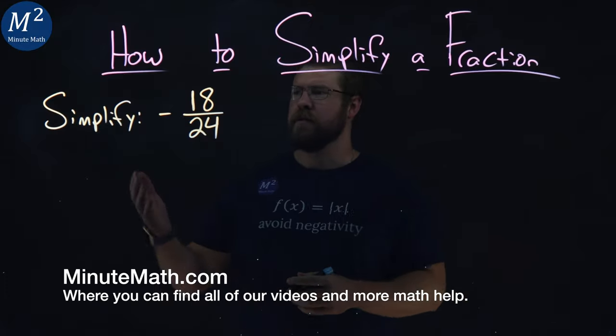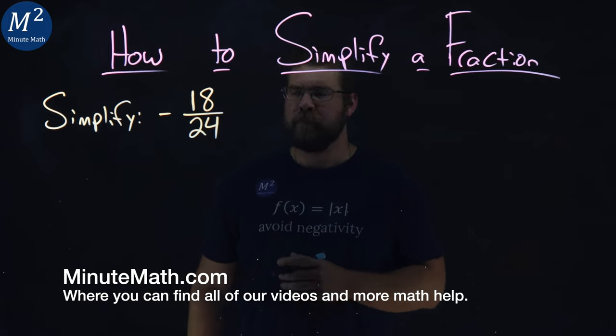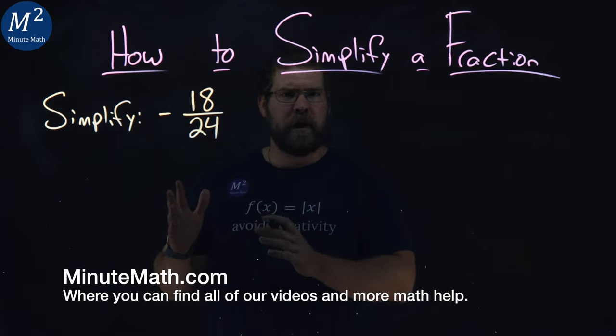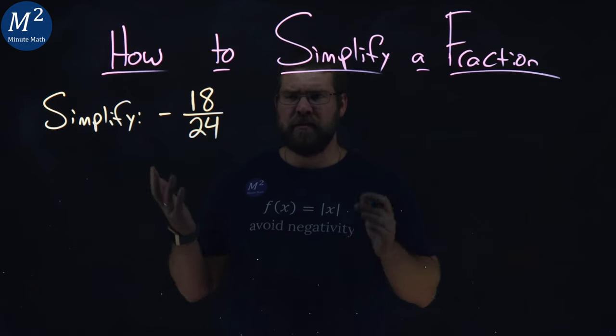We're given this problem here, simplify negative 18 over 24. When we simplify a negative fraction, it's just the same as a positive fraction. Let's keep the negative on the outside, so it's not too bad.